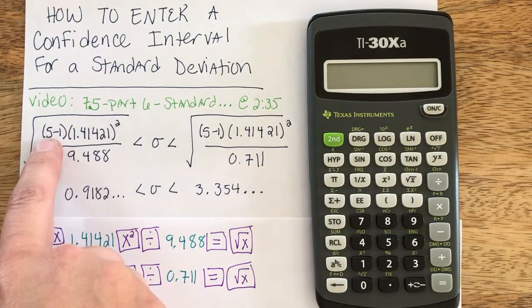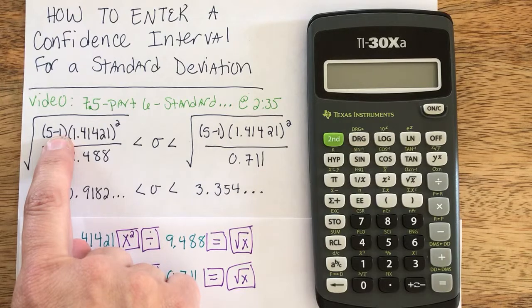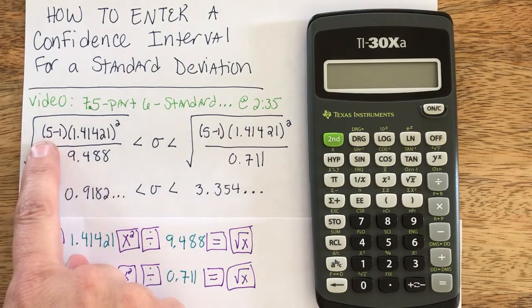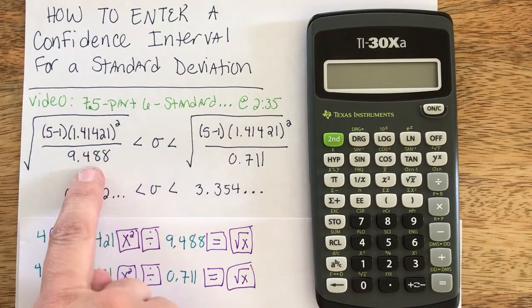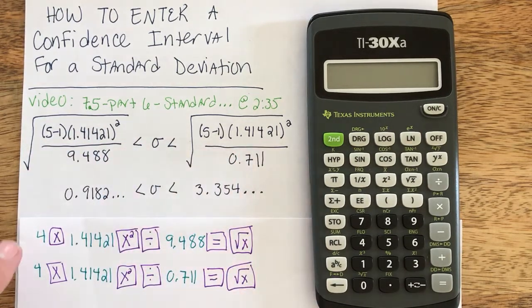Even though I've written it as 5 minus 1 in both cases to represent the way the formula looks, go ahead and do the subtraction yourself. Then what happens is, by subtracting 1 from your sample size, we're not going to need any more parentheses, even though we have parentheses for clarity in the handwritten portion.